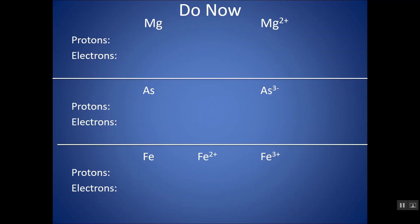So let's do some practice. You might want to pause the video and try these on your own first, and then check your work. You'll notice on the left-hand side I gave you the atom, and now I'm giving you an ion — it now has a charge. So the atom's neutral; the ion now has a charge. Tell me how many protons and electrons are in the atom, and then tell me how many protons and electrons are in the ions.